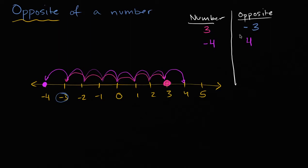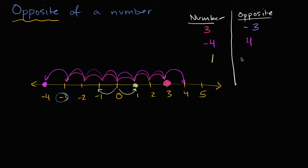So we'll do one last one. What is the opposite of one? Well, one is one to the right of zero, so its opposite is going to be one to the left of zero — negative one. Another way to think about it: one is positive, so its opposite is going to change the sign; instead of being positive, it's going to be negative. It's going to be negative one. Either way, you can think about it.